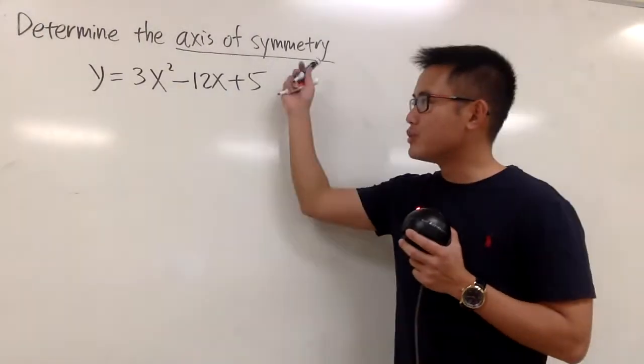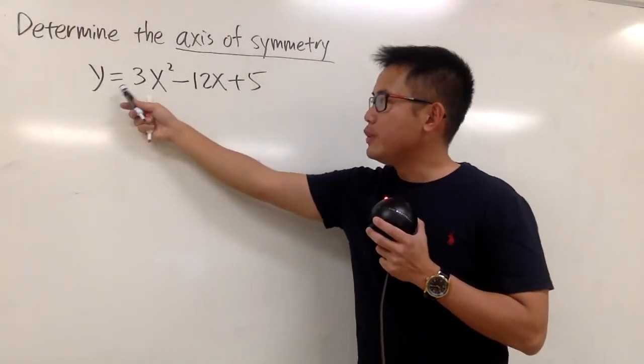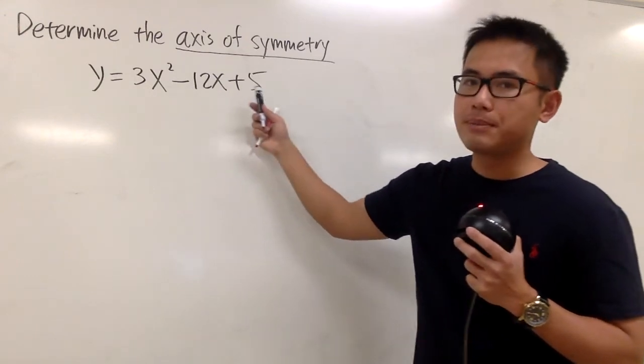Okay, we're going to find the axis of symmetry of this parabola, y is equal to 3x squared minus 12x plus 5.